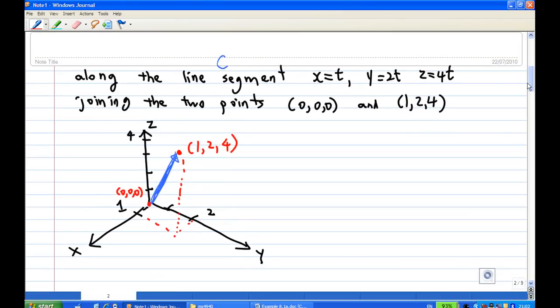So the picture of this path looks like this, you have coordinates (0,0,0) and (1,2,4), and then you join them by a straight line. This straight line is given by x equal to t, y equal to 2t, z equal to 4t, and so this is a straight line path from (0,0,0) to (1,2,4).